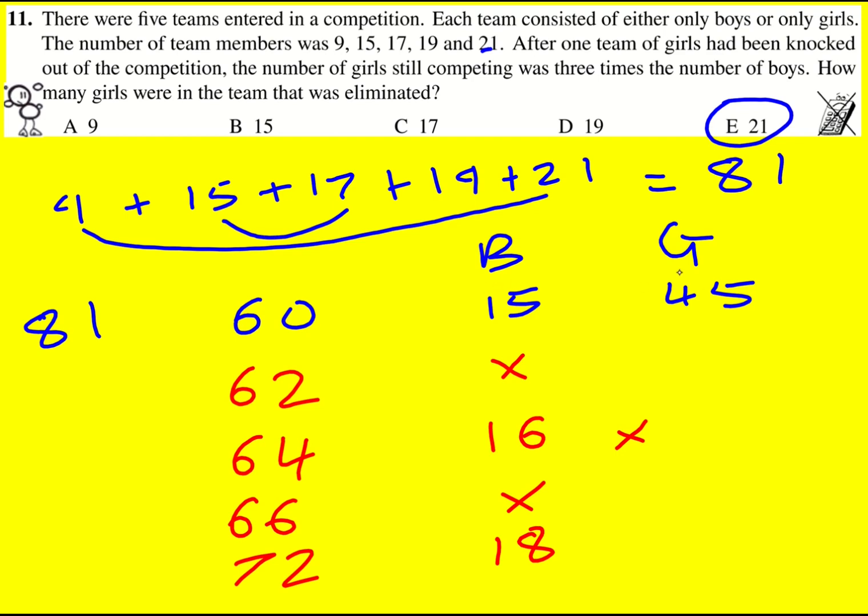15, which is possible, and the other teams would be made of girls, 45, so 21 is the team to eliminate.